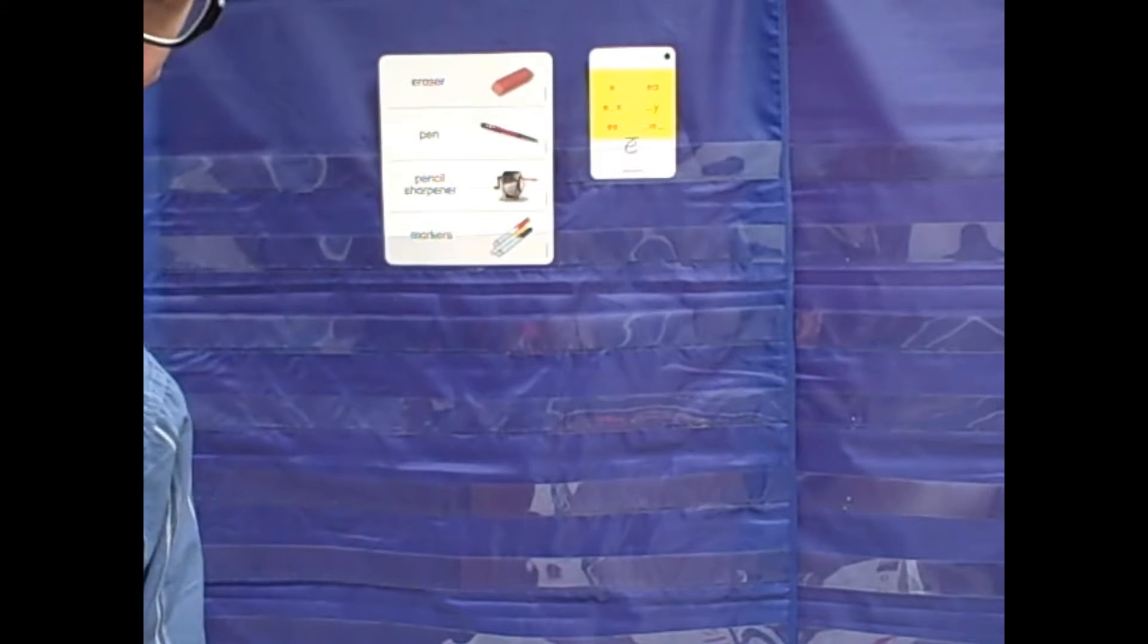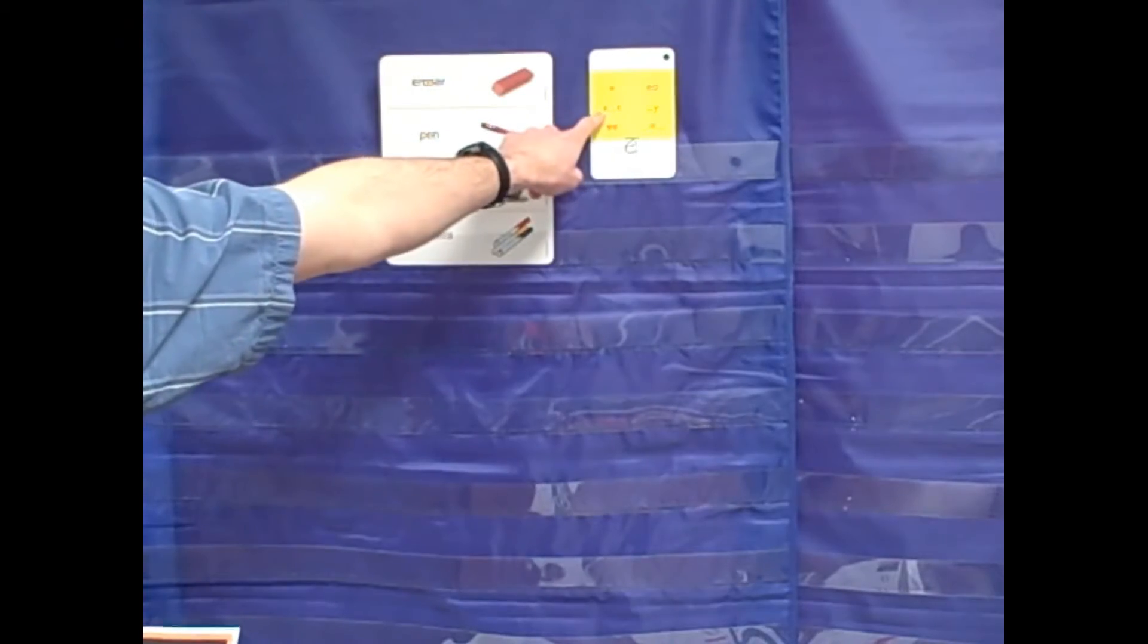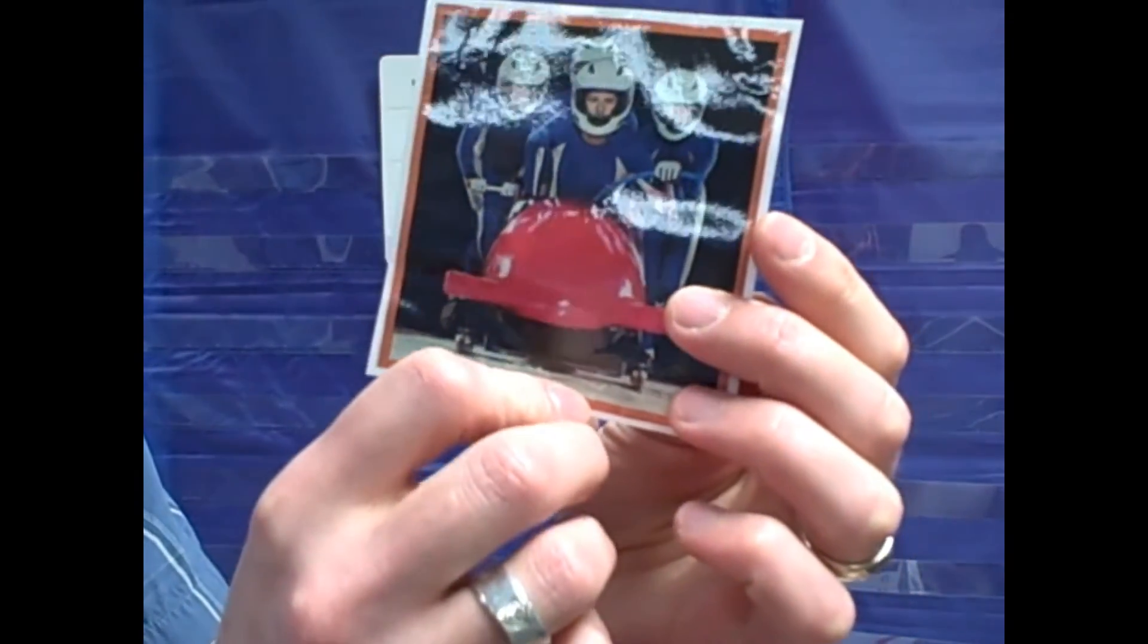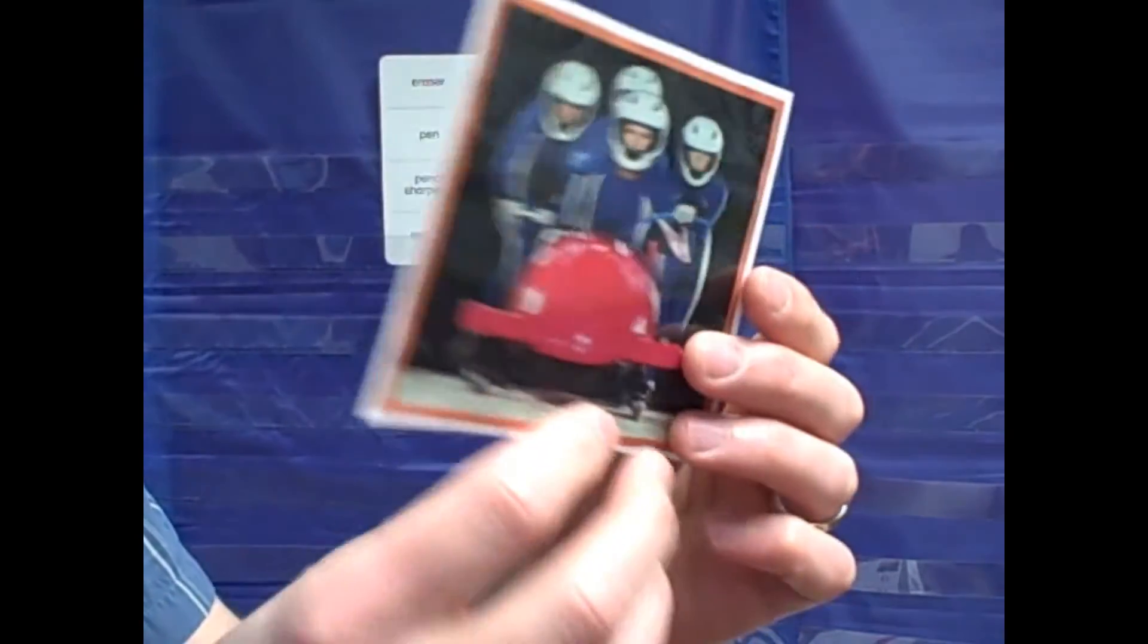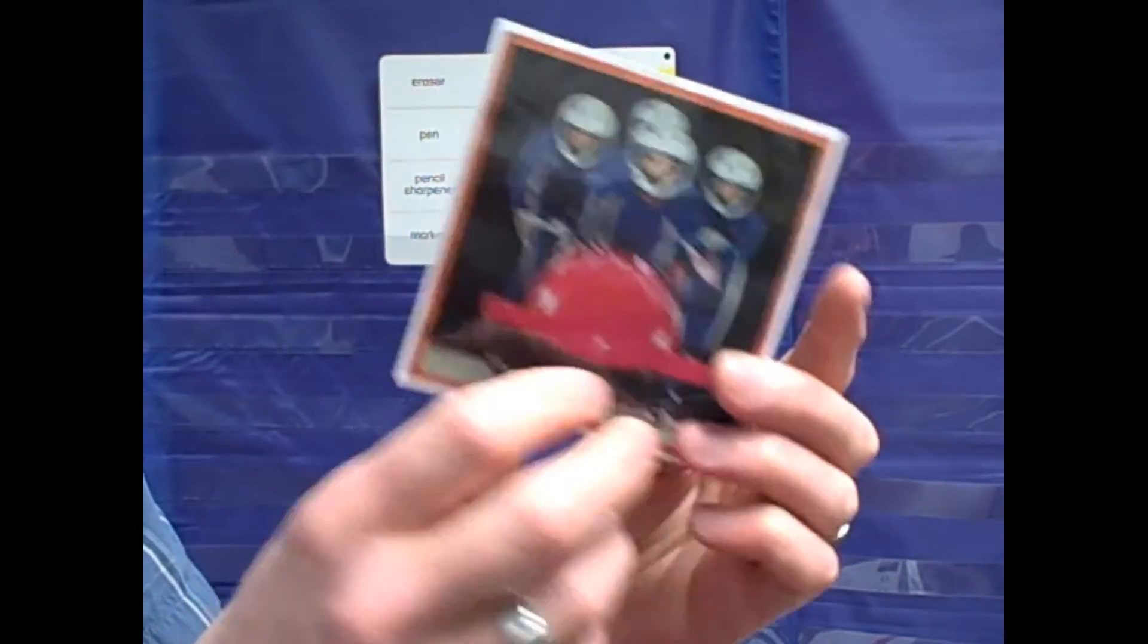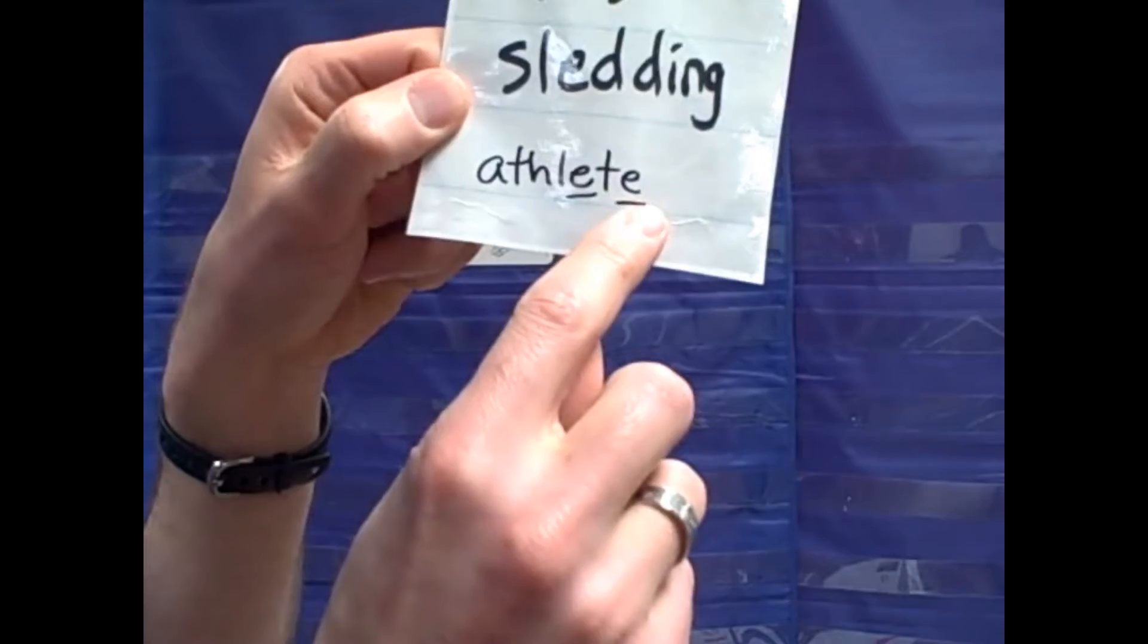The picture I use to practice the spelling for E consonant E is this. People are bobsledding. These people are athletes. I show them the picture, we talk about athlete, a person who runs a lot or works hard, and then we read the word, athlete. E consonant E.